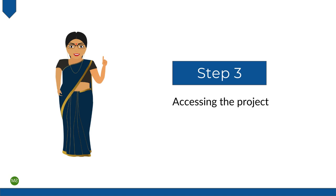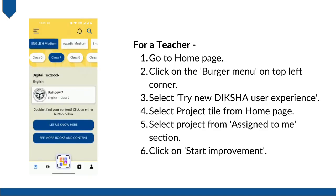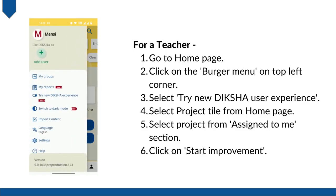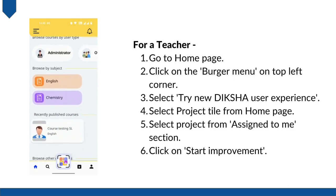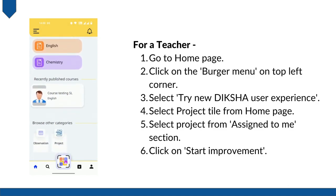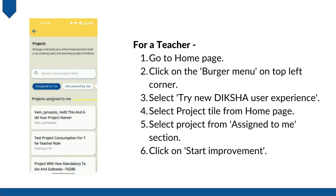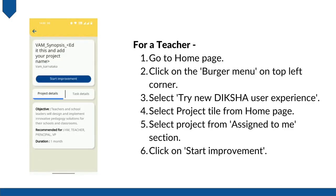The third step is to access the project. If you are a teacher, take the following steps. Go to the home page and click on the burger menu in the top left corner of the screen. Select 'Try new Diksha experience.' After selecting that, the home page will appear. You will see a project tile on your screen. Click on the project tile. In the route assigned to me, select the project assigned to you for Vidya Amrit Mahotsav in your state. Click on 'Start improvement' to start the project.